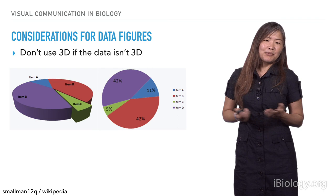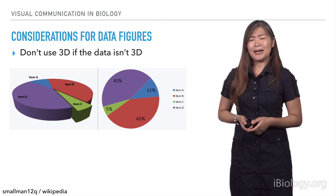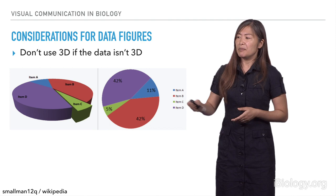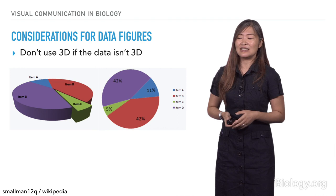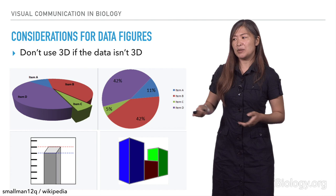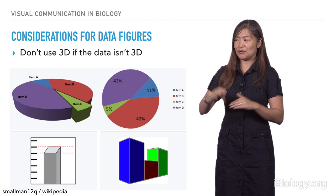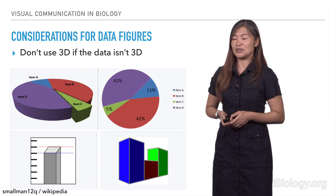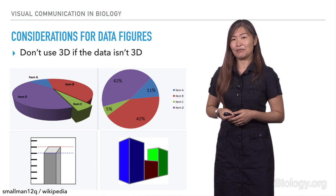Another recommendation, probably one you've heard before, is not to use 3D graphs and charts. In this example, we have a pie chart represented in both 3D and 2D. In the 3D representation, the blue and green wedges look to be about the same size, but in 2D it's very clear the blue wedge is significantly larger. The same with bar graphs — with 3D representations, it's not clear which part of the 3D bar you're supposed to read for that measurement. The general recommendation is not to use a 3D representation unless you're representing actual 3D spatial data.